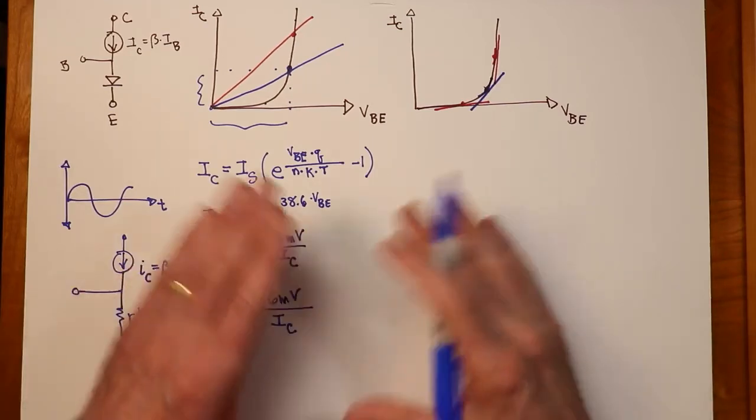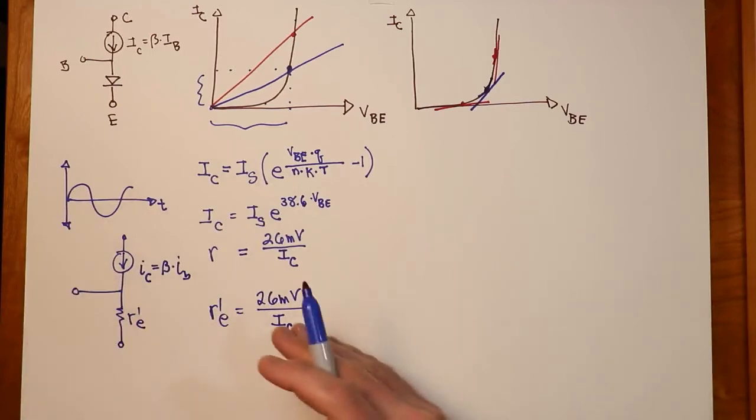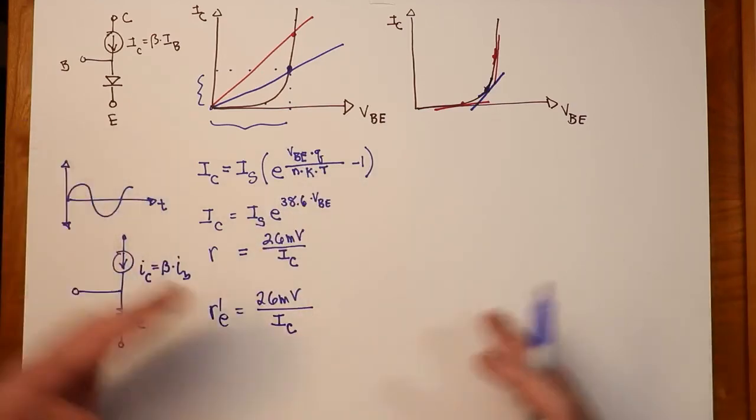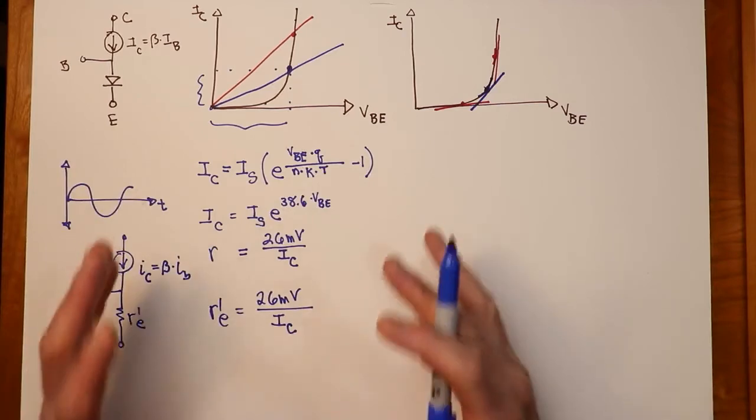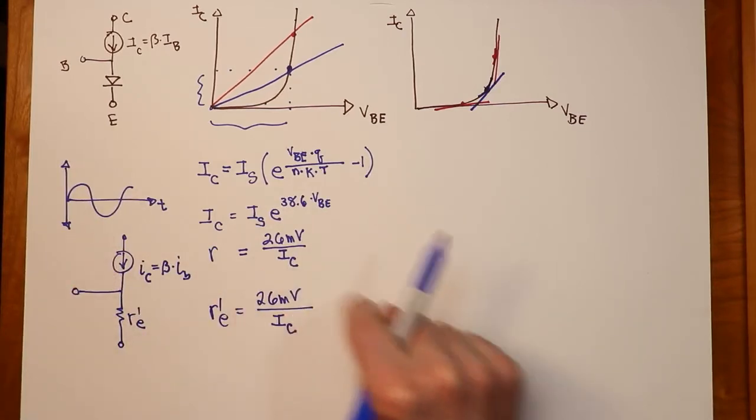as R prime E changes, this is going to impact things like the voltage gain of our amplifier. So we would like to have a very stable amplifier. In other words, I don't want to make a thousand amplifiers and have some of them with a gain of 100, and some of them with a gain of 150, and some of them with a gain of 32. And we want them all to be very, very similar.